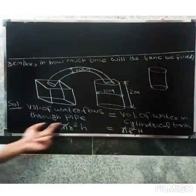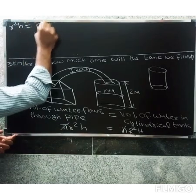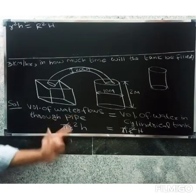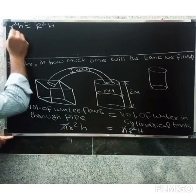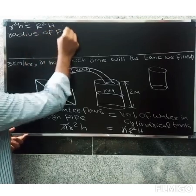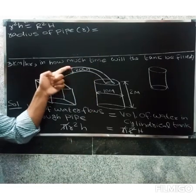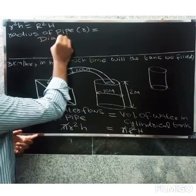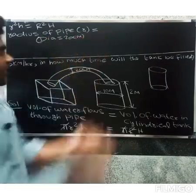So we have pi r squared h equal to pi R squared H. For the pipe, the radius is small r and the height is small h. The radius of the cylinder is capital R. The diameter of the pipe is 20 cm.